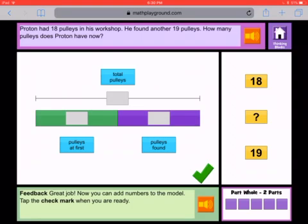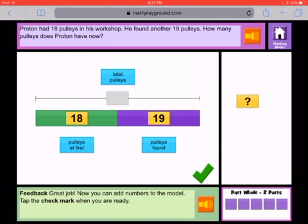Proton had 18 pulleys in his workshop. I'm going to tap and drag the 18 to the pulleys that he had at first. It says he found another 19, so tap and drag the 19 to the ones that he found, represented by the purple. And then the total is going to be the thing that we don't know.